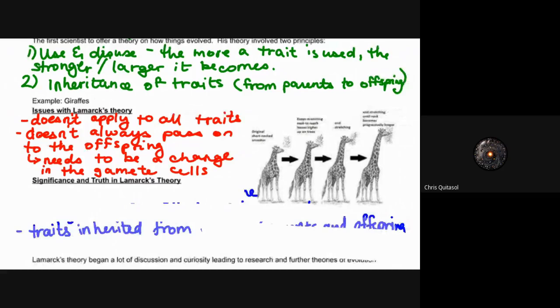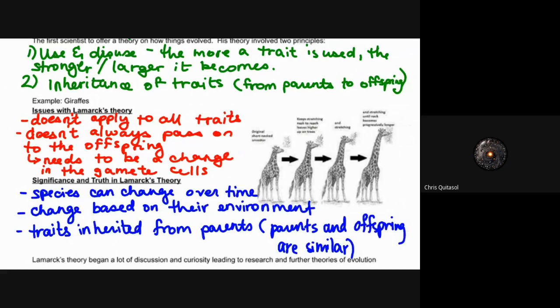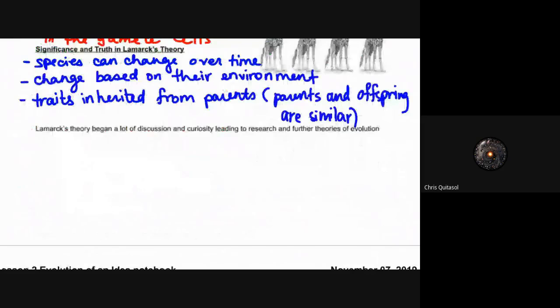Lamarck suggested that things can change over time - nothing is immutable, or species themselves are not immutable - and they do change over a period of time based on their environment. These traits develop as a result of being around specific environmental factors that allow for things to develop, and then as a result of those things to develop, these traits are then passed on from parents to offspring. It's interesting because it did lead to a lot of discussion with regards to current research at the time, furthering theories of evolution even though it wasn't really called that at the time.